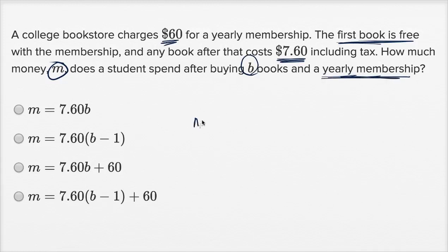So M, the amount of money that they're going to spend, it's going to be the yearly membership, which is $60. We're gonna do everything in dollars. $60, plus the amount that they spend on books. So they're gonna buy B books, and it's $7.60 per book.